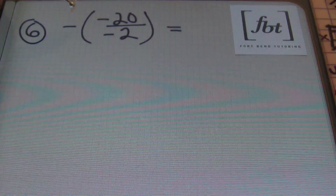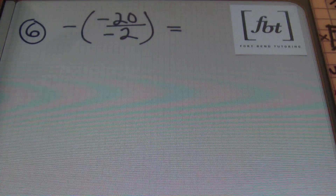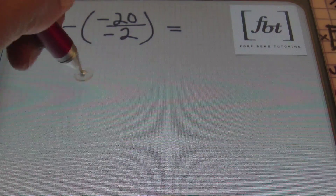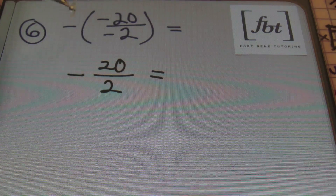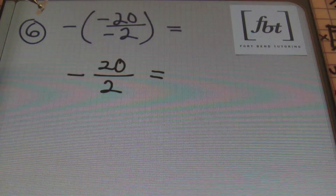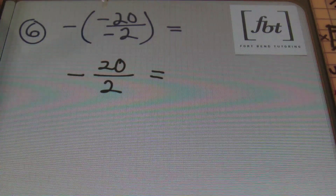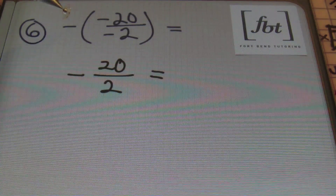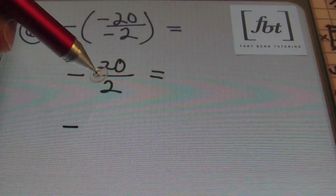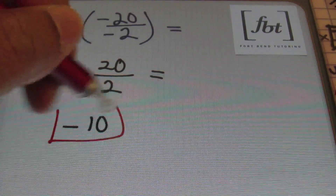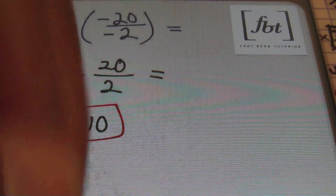Check this out — how many negative signs are involved in this problem? One, two, three. An odd number of negative signs will always give you a negative result. This can be rewritten and simplified into negative 20 over two, because a negative times a negative divided by a negative is a negative result. Alternatively, inside the parentheses a negative divided by a negative is positive, and the opposite of a positive is negative. So we bring down the negative sign and 20 divided by 2 is 10, giving us negative 10.